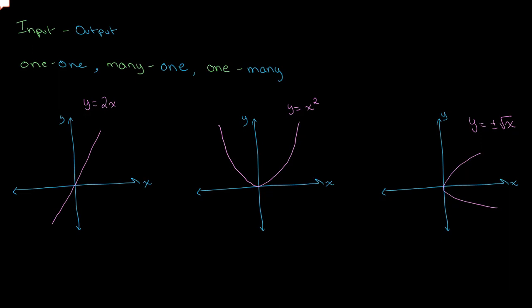There are three main types of mapping: one-one, many-one, and one-many. The way to interpret the names of the different types of mapping is that it basically compares the ratio of the number of inputs to the number of outputs. So for one-one, there is one output for one input; for many-one, there is only one output for many inputs; and for one-many, there are many outputs for one input.